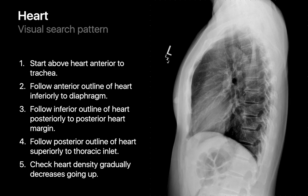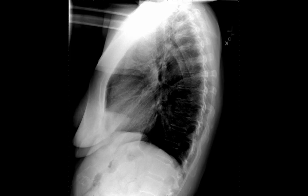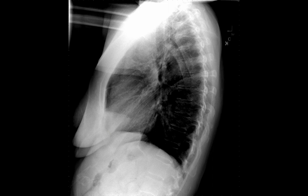The visual search finishes with the heart. Start in the anterior upper chest, follow the anterior margin of the cardiac silhouette, its inferior margin, and then its posterior margin back up to where you started. Pay attention to the overall density of the cardiac silhouette, which should gradually decrease as your gaze shifts superiorly. You may see an opacity overlying the cardiac silhouette like a pericardial cyst, or an Oreo sign along the anterior margin corresponding to a pericardial effusion.